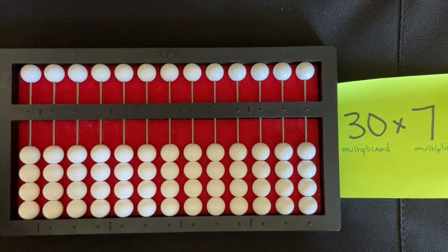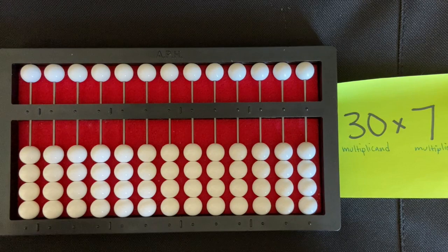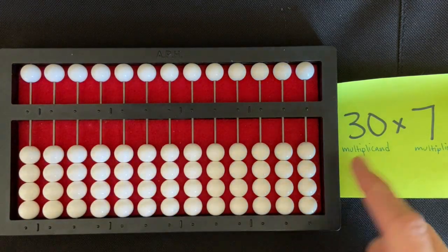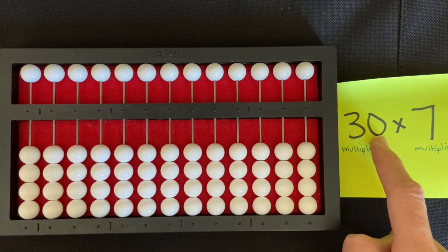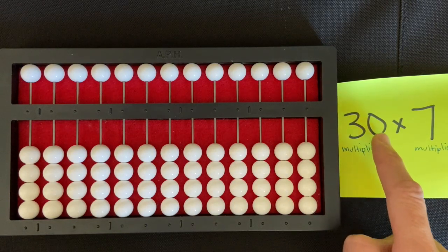I'm going to be doing a two-digit by one-digit multiplication using the counting method on my abacus. I'm going to have in this problem a zero in my multiplicand in the ones place.